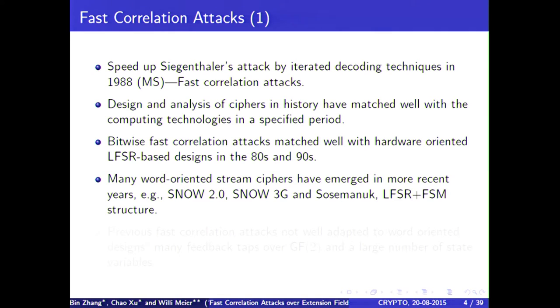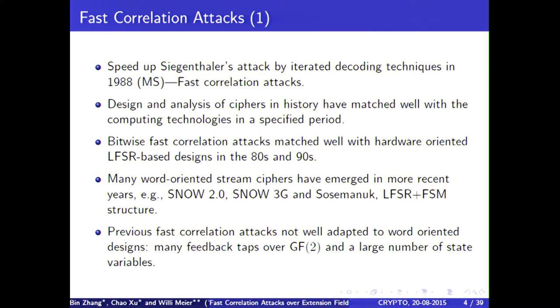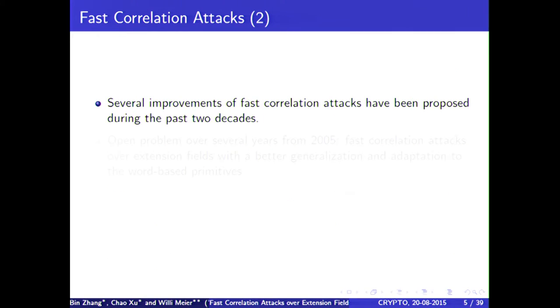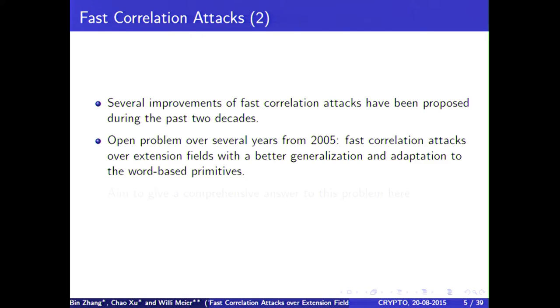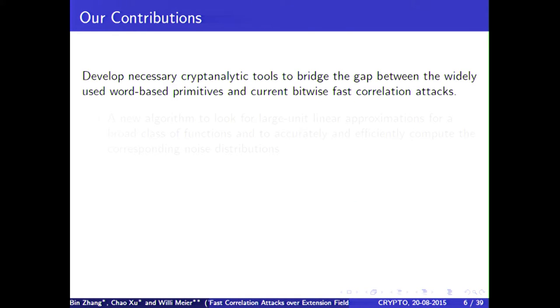If you look to history, the design and analysis of stream ciphers in history have matched well with the computing technologies in the appropriate period. In those days, bitwise fast correlation attacks matched well with the hardware-oriented bitwise LFSR-based designs in the 80s and 90s. But many more recent word-oriented stream ciphers are of a different type. It turns out that the previous fast correlation attacks are not well adapted to word-oriented designs. We have many feedback taps and a large number of state variables. We have seen several improvements of fast correlation attacks, but one open problem remained.